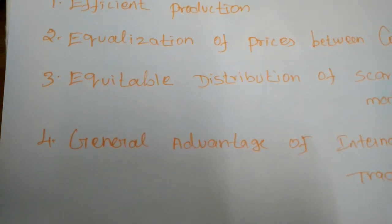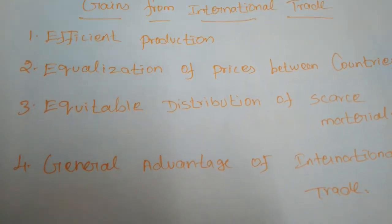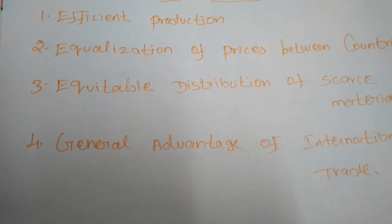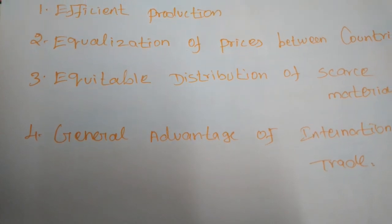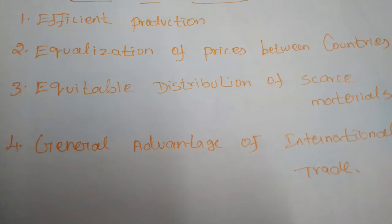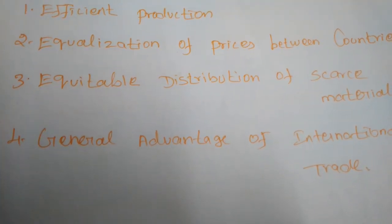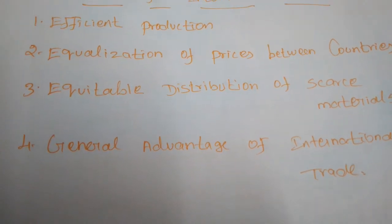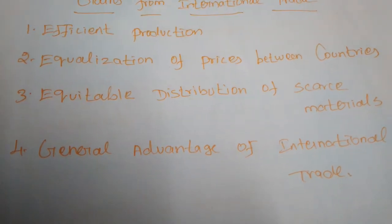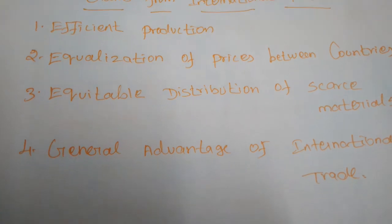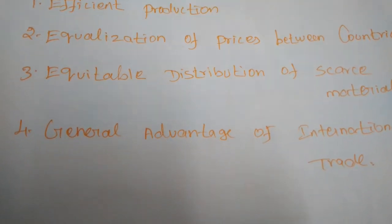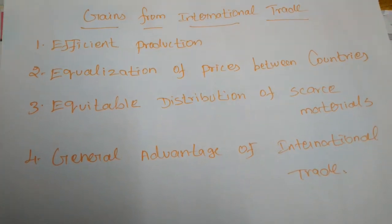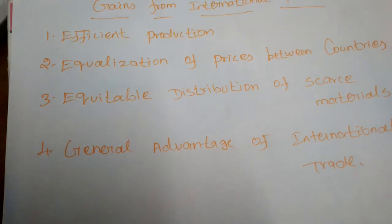Next: equalization of prices between countries. The prices of goods are equalized between countries, though in reality it has not fully happened. By using absolute cost advantages or labor-intensive and capital-intensive goods, all nations can maintain reasonable or equalized prices. The difference may exist based on exchange rates, and some slight changes may occur due to the cost of transportation plus cost of production.